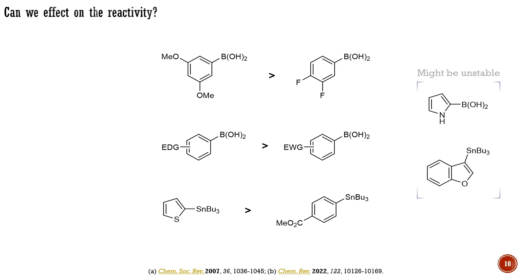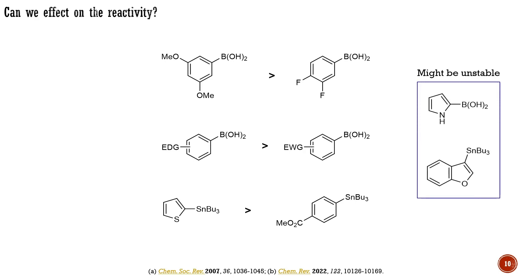Organo-tin reagents based on electron-rich 5-membered heterocycles are better substrates in Stille coupling than organo-tin reagents possessing electron-withdrawing carbonyl groups. It is essential to remember that the increased reactivity of organometallics based on electron-rich systems can be complicated by the instability of the systems and unwanted side reactions. In fact, some organometallics based on electron-rich 5-membered heterocycles are quite unstable.